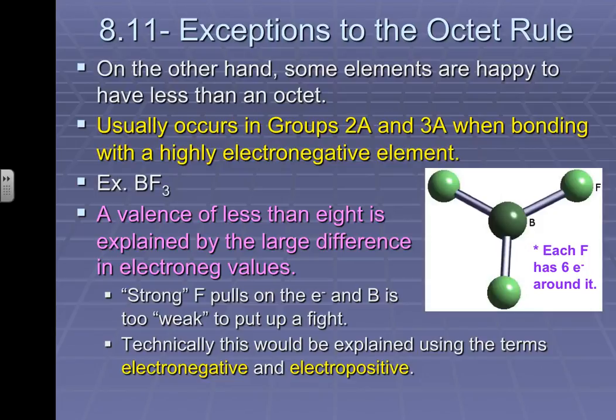You might notice the words at the bottom. Electronegative is obviously a word we've talked about several times before, but it's kind of important to throw out this word, electropositive, which you might be able to determine is the exact opposite of being electronegative. Electronegative means you're going to be able to draw electrons towards yourself relatively easily, and electropositive is not. In fact, you're going to give away electrons relatively easily. So boron is very electropositive, fluorine is very electronegative, and it's that perfect storm.